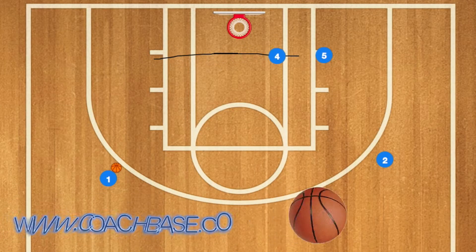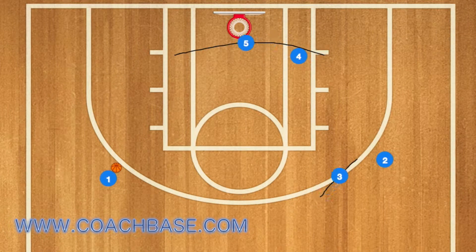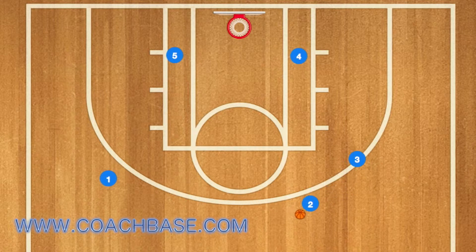First, player 4 is going to set a screen for player 5. Player 5 will use that screen and post up on the left post, while player 3 screens for player 2. Player 2 will use player 3 as a screen, and player 1 will pass the basketball, then player 2 will take a really quick shot.